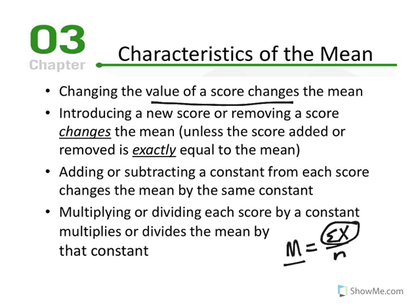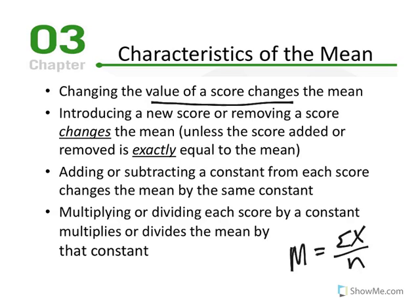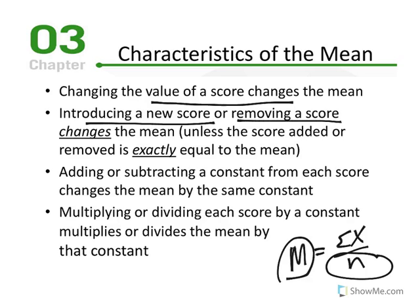Another characteristic: introducing a new score or removing a score changes the mean. Given our equation M equals the sum of X over N, adding or removing a score affects the variable N — the sample size (lowercase n) or population size (capital N). If that variable changes, the mean will also change.